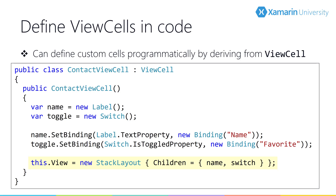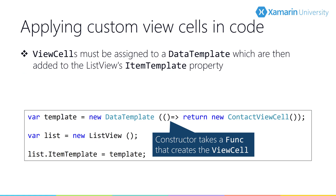Just like the default cells, we can define our custom view cells in code as well. The key here is the assignment to the view property — this is what will be inflated when each cell is created. To assign a view cell programmatically, you'll first instantiate a data template passing in a lambda that instantiates your custom view cell, or provide the view cell type and the data template will use reflection to create instances for you. The data template is then assigned to the ListView's ItemTemplate property.